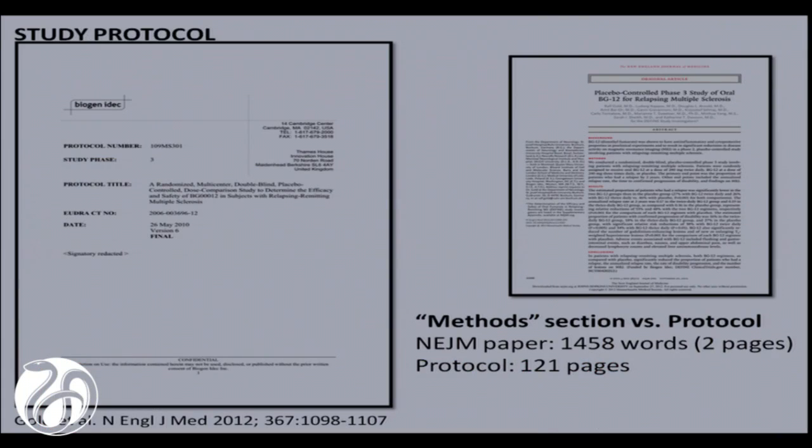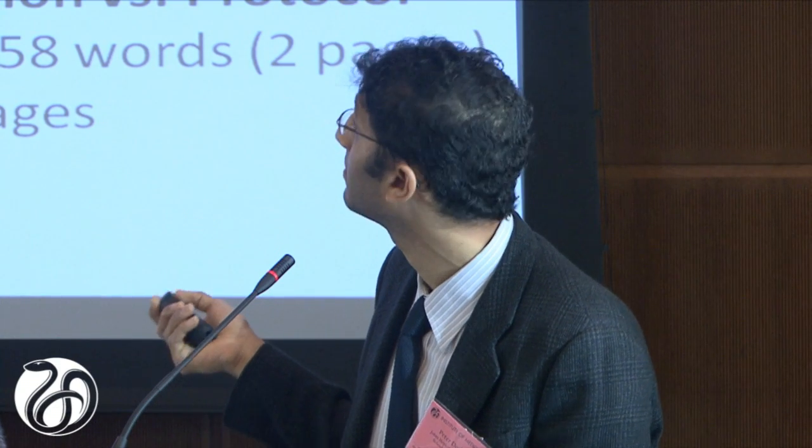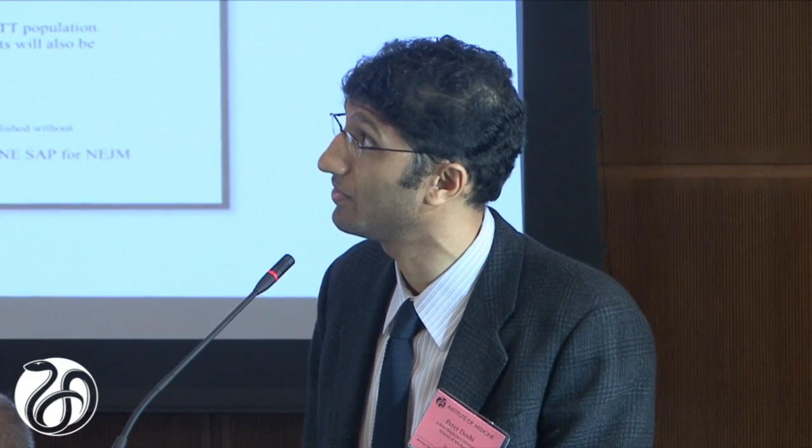Protocols show us how the trial was to be run and how data was to be collected. They provide far more detail than a methods section in a journal article. From an example on the New England Journal website where the protocol is posted: methods in the article, two pages; protocol, 121 pages. Protocols are so long, in fact, that they need their own table of contents. Protocols can also include pre-specified statistical tests in a section called the Statistical Analysis Plan, which may be in both narrative form as well as including statistical code that will be used to analyze the trial results.